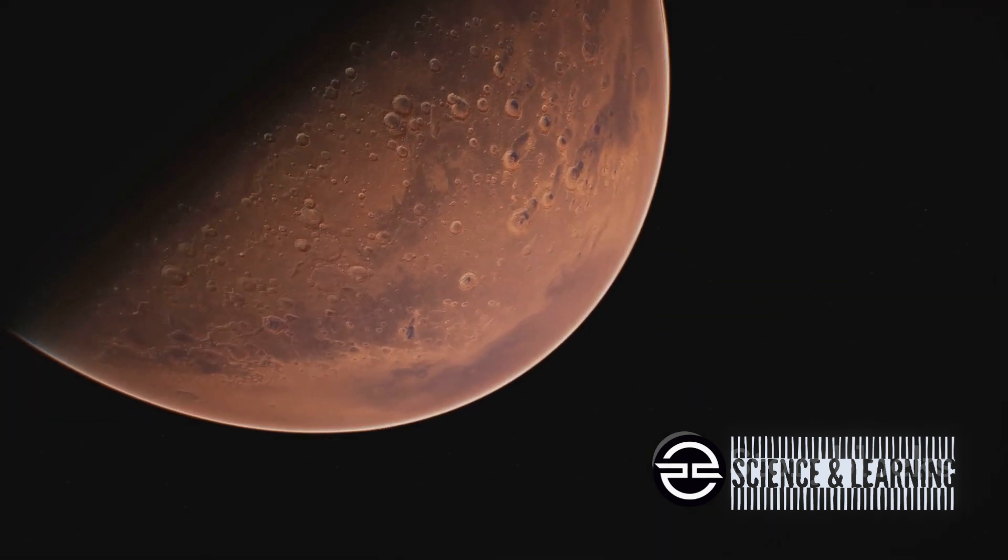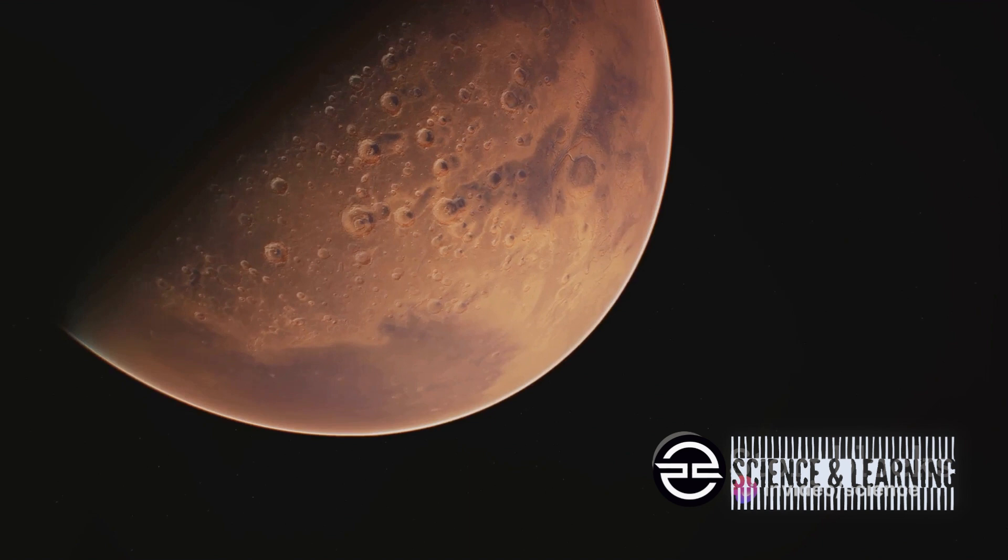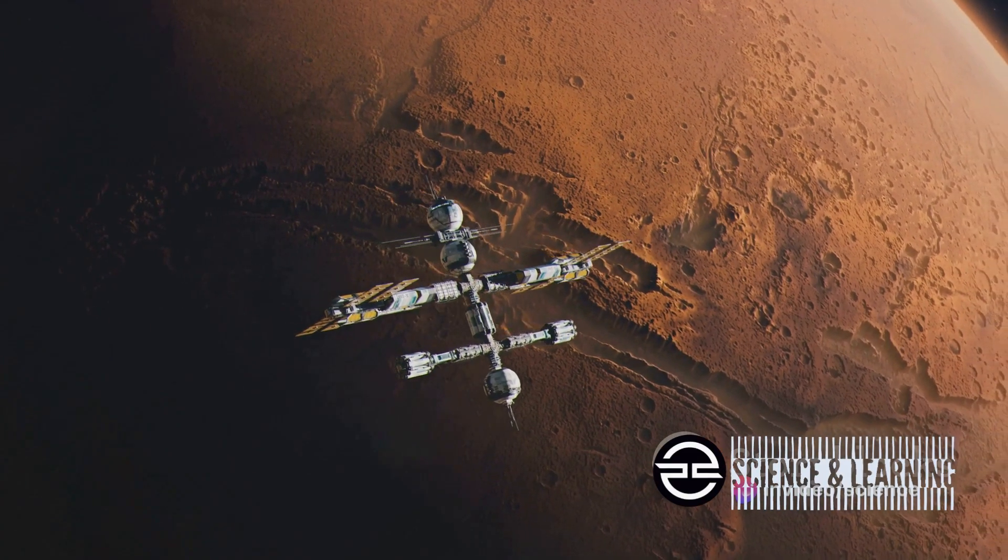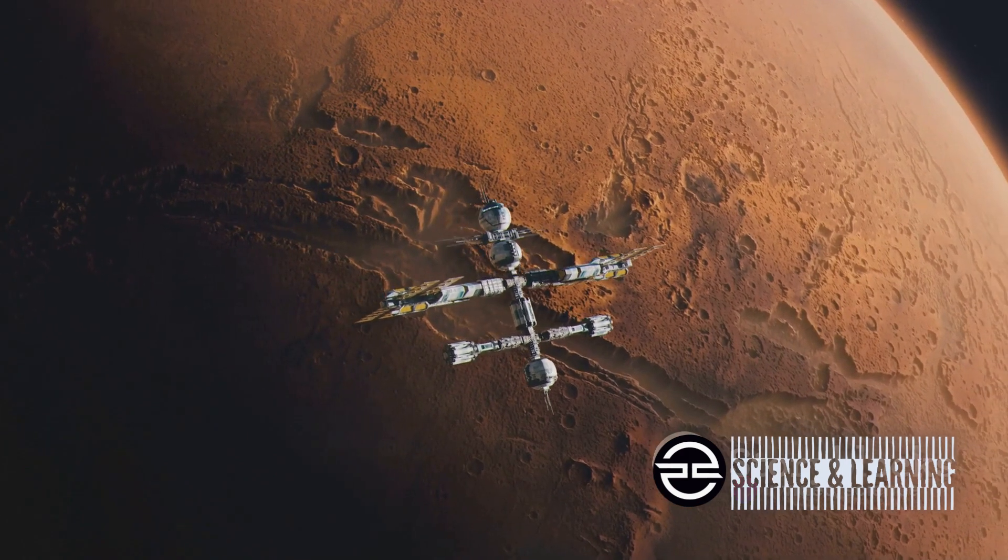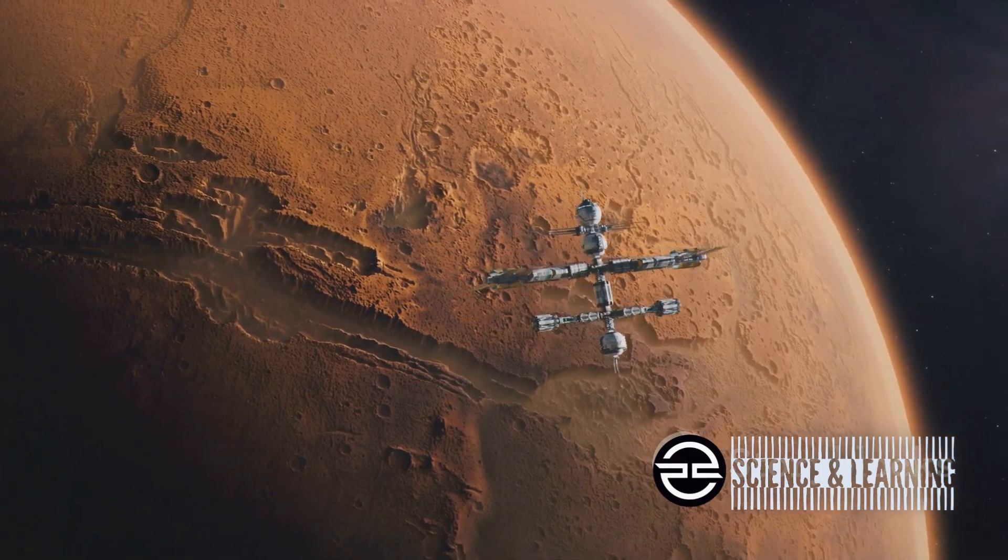One such cycle lasts an astonishing 2.4 million years, and it's during this dance that Mars does something rather unexpected. It doesn't tap dance or twirl, mind you, but its gravitational pull subtly nudges our planet, causing shifts that ripple all the way down to our ocean's depths.